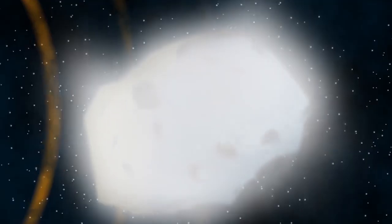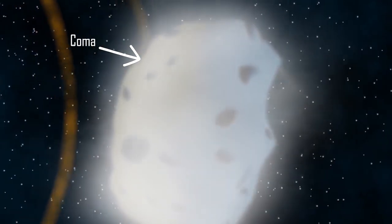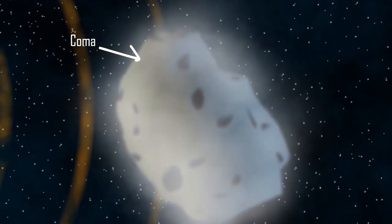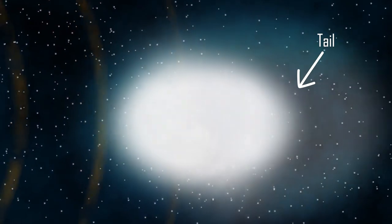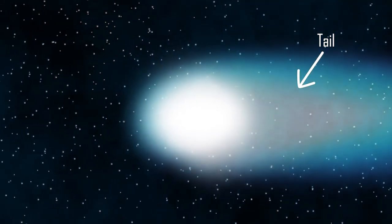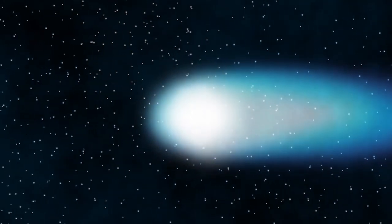As dust and gases stream away from the nucleus, sunlight and particles coming from the Sun push them into a bright tail that stretches behind the comet for millions of kilometers. Most comets have actually two tails.